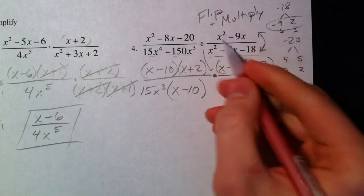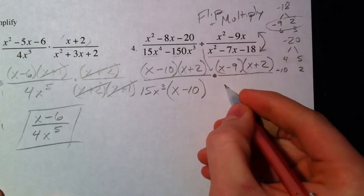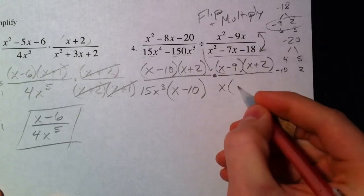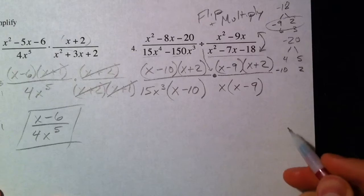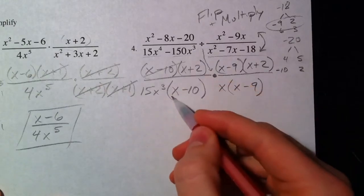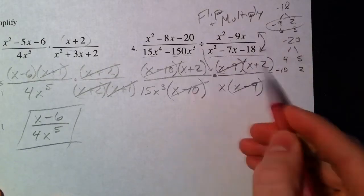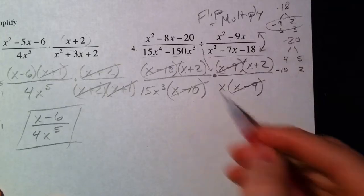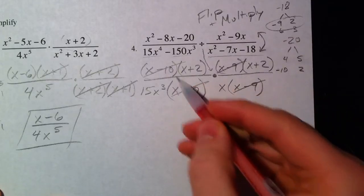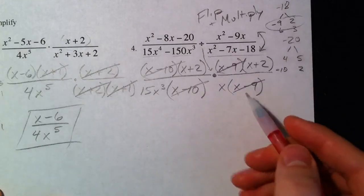So X squared minus 9X, another binomial that has an X in common, and so we can pull out the X and that leaves an X minus 9. So what's left over? Well, X minus 10s cross out, X minus 9s cross out. Now sometimes we get all really excited—X plus 2s match up—but they're not top and bottom. These cross out because something divided by itself is 1. X plus 2s don't cross out.